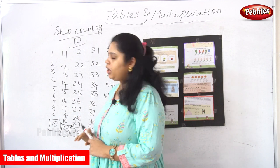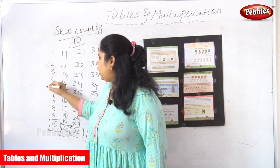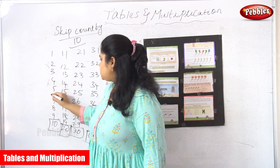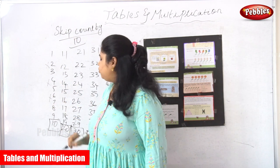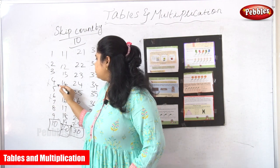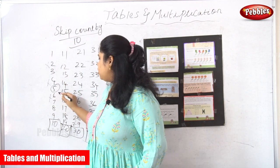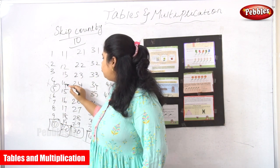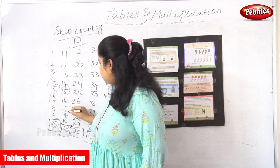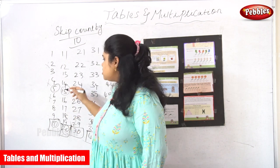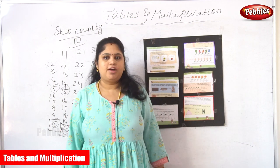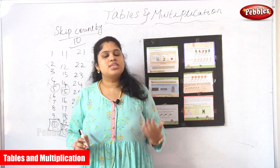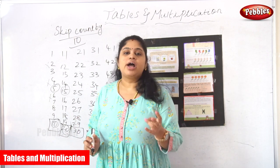For skip count by 2, we start from 2 and take every 2nd number. If you want to skip count by 5, you avoid 1, 2, 3, 4 — and take the 5th number. Then 1, 2, 3, 4 — 5th number. Again 1, 2, 3, 4 — 5th number. This is how skip count by 5 works. Now you all understand how to skip numbers by 2, 5, and 10.